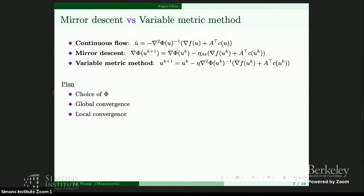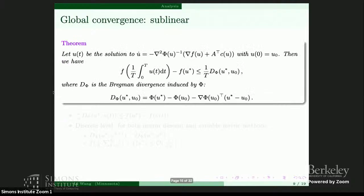That's what I'm going to show next. With this special choice of phi, I'll show both global and local convergence of the mirror descent. The key point is that we can use this framework to show the global convergence of mirror descent, prove the global convergence for the general variable metric method, and in return use the framework to show super-linear local convergence for the Newton-type method — and also super-linear local convergence for the mirror descent.